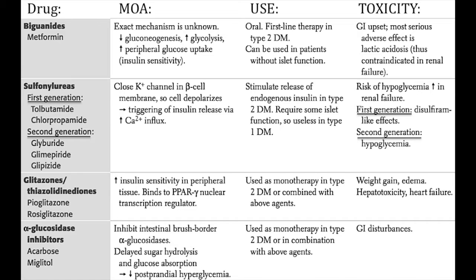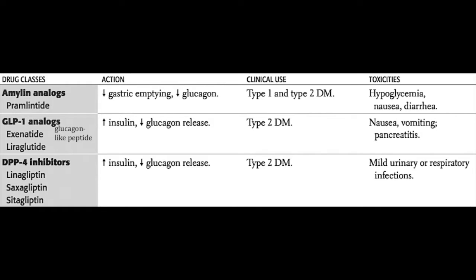The next drug is actually injected. Pramlintide is an analog of the protein amylin, which is normally secreted along with insulin by beta cells. The main function of pramlintide is to decrease glucagon secretion, and in this way it can delay gastric emptying. Its side effects include hypoglycemia, nausea, and diarrhea.